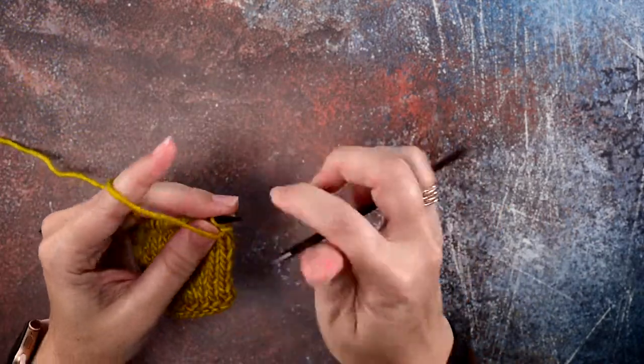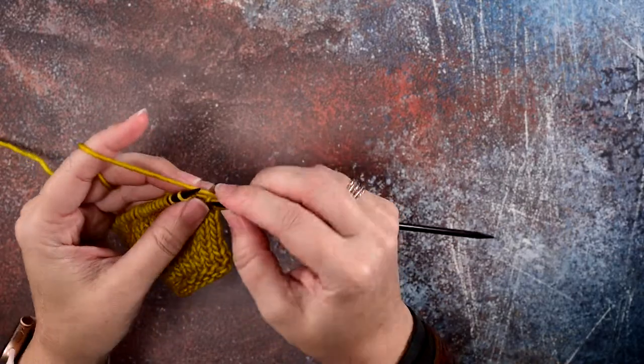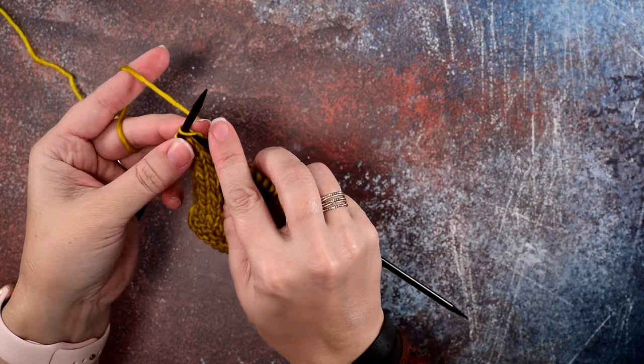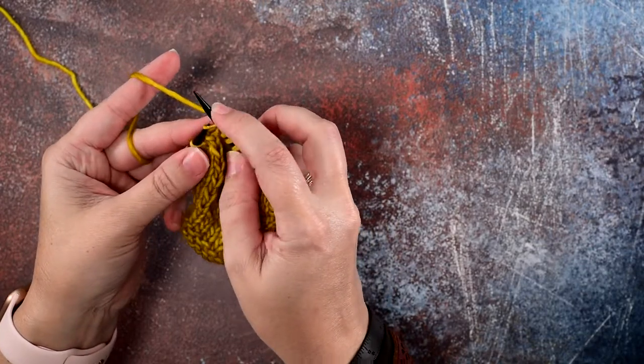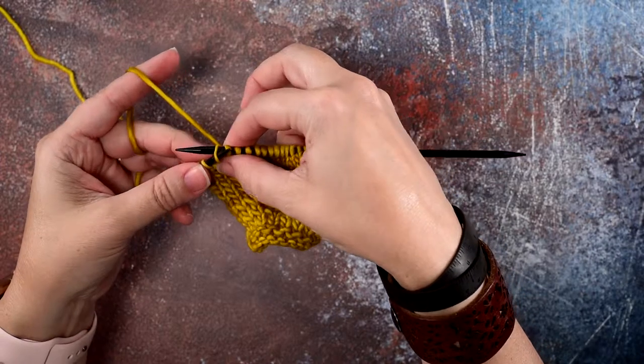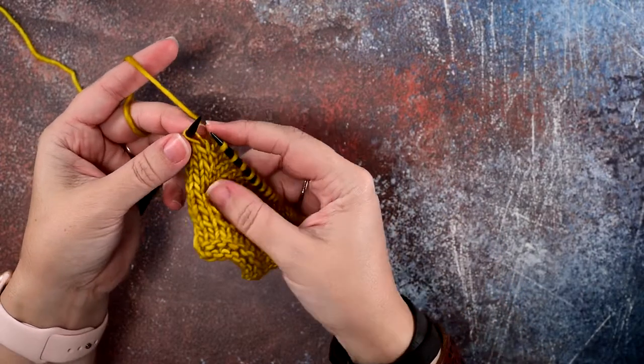So first we slip that stitch knitwise onto our right hand needle and then place it back on the left hand needle purlwise, so we've changed the orientation of our stitch.